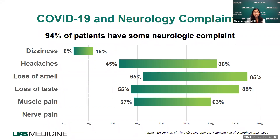Nerve pain with either some tingling or burning can sometimes be seen in patients with COVID-19. This pain can be anywhere in the limbs — in the arms or legs.